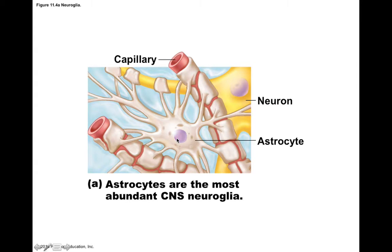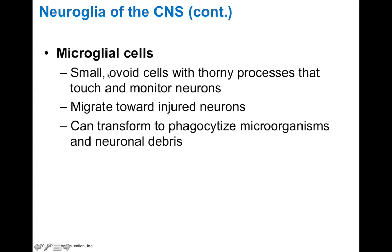Microglial cells are small ovoid cells with thorny processes that touch and monitor neurons. They can migrate toward injured neurons and transform into an activated form that phagocytoses microorganisms and neuronal debris. Think of microglial cells as the immune cells of your brain — they're phagocytes that remove infectious organisms and dead material. For someone who has a stroke, the dead nervous tissue is reabsorbed by microglial cells, leaving a fluid-filled space where brain tissue used to be.